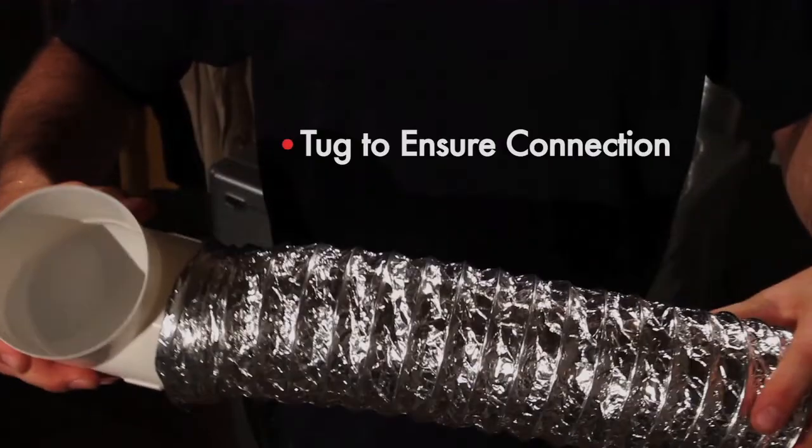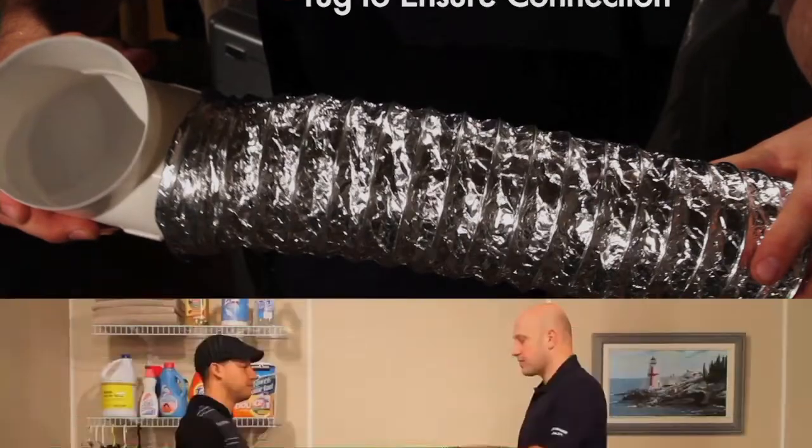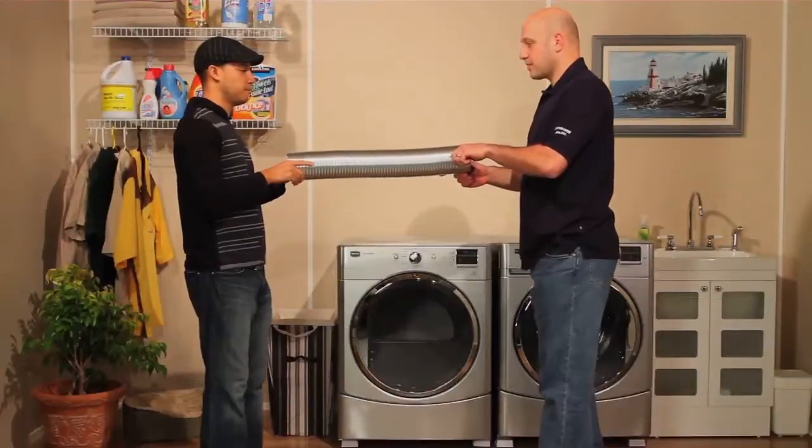Give the duct a tug while holding the elbow. They should stay connected. Next, stretch your duct to the required length that will connect your dryer to the venting duct.